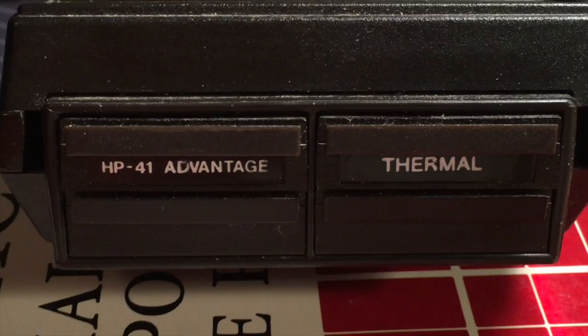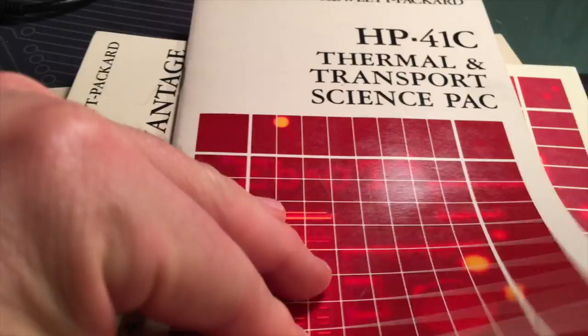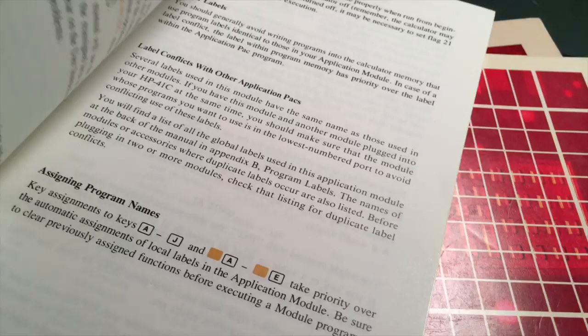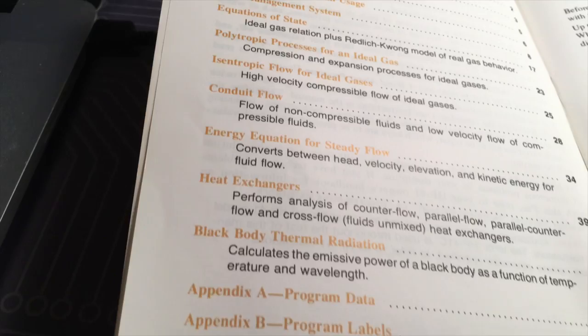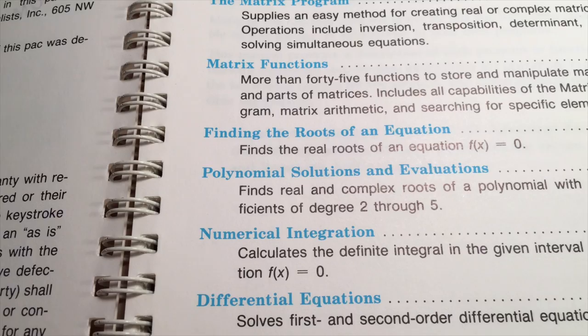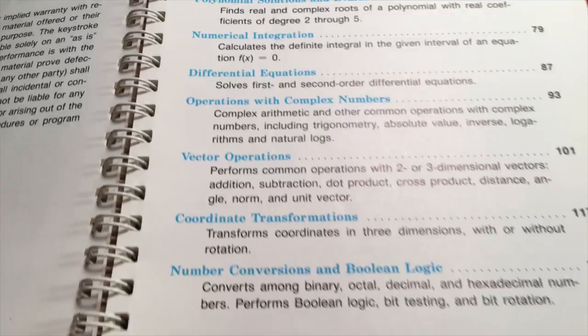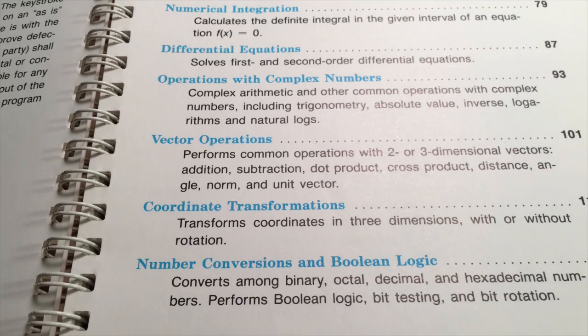So this is some of the documentation. This is for the thermal one. These are some of the functions it had. Then for Advantage, it did matrices functions, equation roots, polynomial functions, differential equations, complex numbers for electrical engineers, vector operations, coordinate transfer, conversions, and boolean logic. Like for programmers, you could convert between octal, decimal, hexadecimal, binary, that kind of thing.